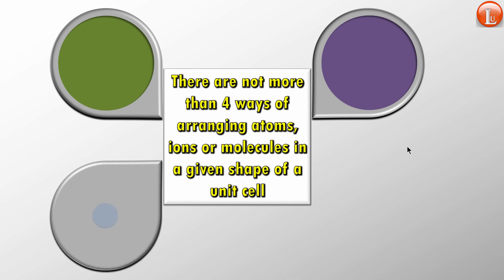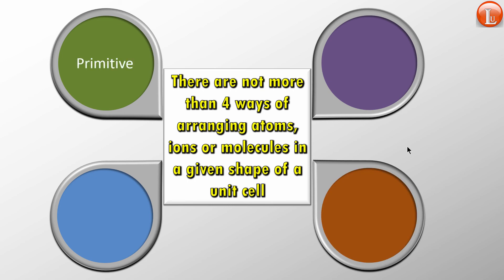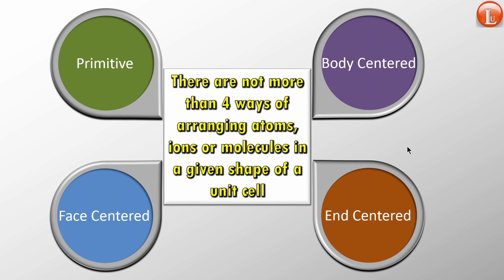There is only one shape which has all four arrangements, and that is orthorhombic. The rest have fewer than four. The four arrangements are: primitive, body-centered, face-centered, and end-centered. In the next part, part three, we'll be talking about the cubic shape and explore how these four arrangements exist — what primitive, body-centered, face-centered, and end-centered mean. Cubic has only three of them: primitive, body-centered, and face-centered. It doesn't have end-centered, and we'll find out why.